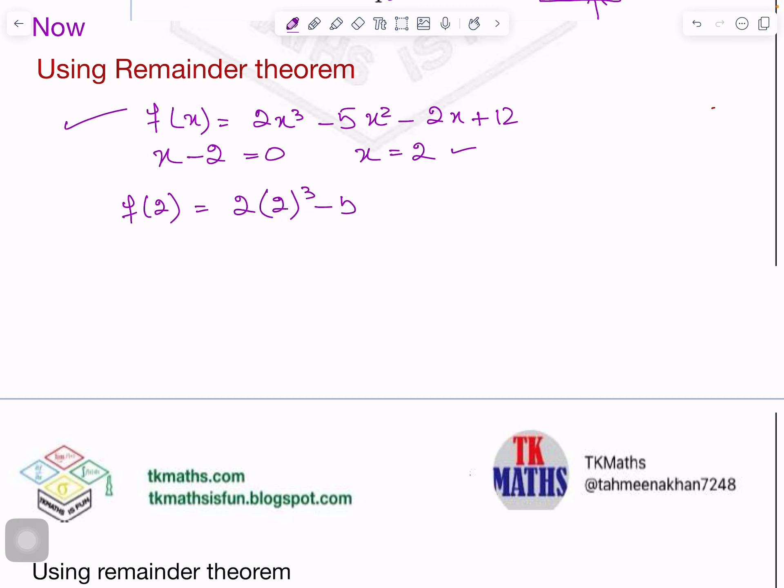So now I will substitute the value of x from the divisor into the polynomial. We have seen in the long division, the answer was 4, remainder. So it should come the same, 4. So let us quickly do it. You can use calculator to calculate it faster. So I got here answer 4. So f(2) equals 4 means your remainder is 4 because this gives you remainder and you have divided it by which divisor? x minus 2.